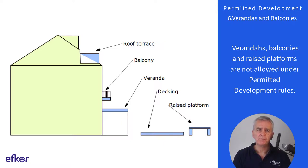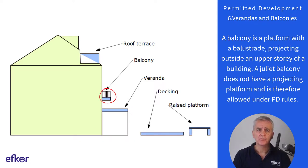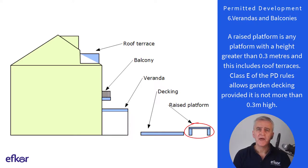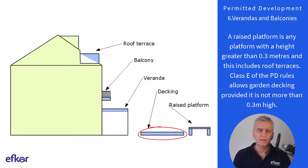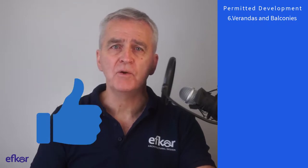Condition six: verandas and balconies. These structures — verandas, balconies and raised platforms — are not allowed under PD rules. A veranda is a roofed open air gallery attached to the outside of a building and often partly enclosed. A balcony is a platform with a balustrade projecting outside an upper story of a building. A Juliet balcony does not have a projecting platform and is therefore allowed under PD rules. A raised platform is any platform with a height greater than 0.3 metres, and this includes roof terraces. Note that class E of the PD rules allows garden decking provided it is not more than 0.3 metres high.